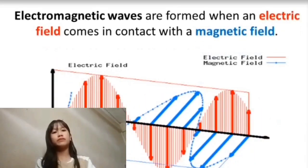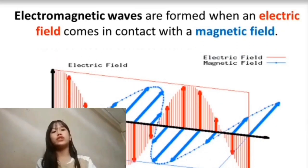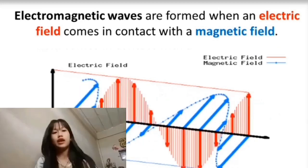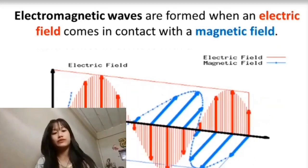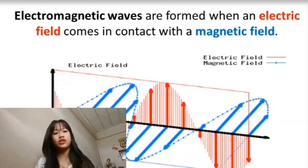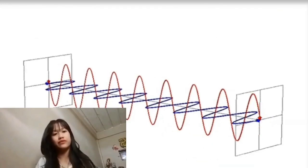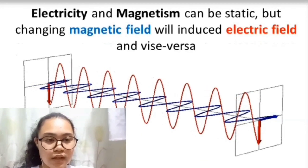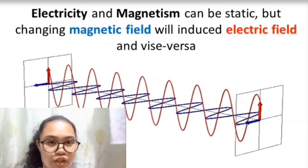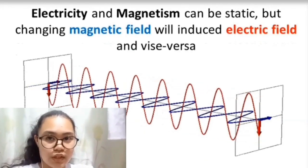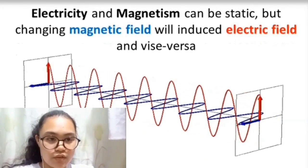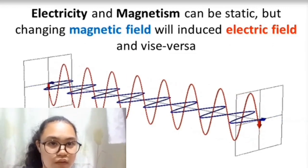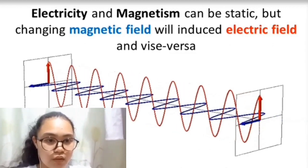Now to dig in more deeply, let's focus on how electromagnetic waves are formed. Electromagnetic waves are formed when an electric field comes in contact with a magnetic field. Electricity and magnetism can be static, but a changing magnetic field will induce an electric field and vice versa. Through these changing fields, electromagnetic waves are formed.